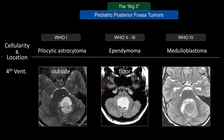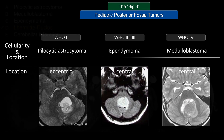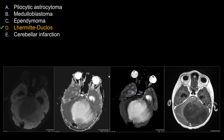Location-wise, pilocytic astrocytoma is outside the fourth ventricle — eccentric and extraventricular — whereas classic ependymoma is an intraventricular tumor derived from the floor of the fourth ventricle, and classic medulloblastoma comes from the roof of the fourth ventricle, referring more to group III and group IV medulloblastoma. Other parameters that can help differentiate include MR perfusion and spectroscopy. With medulloblastoma, you expect hyperperfusion and a more malignant pattern on spectroscopy.